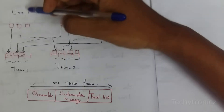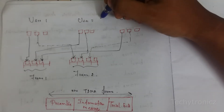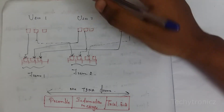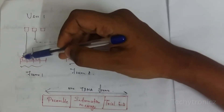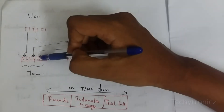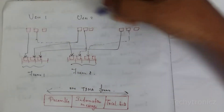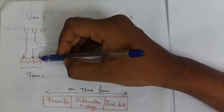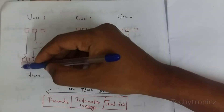Now, looking at the frame structure example with three users: one frame contains three time slots. User 1 uses time slot 1, User 2 uses time slot 2, and User 3 uses time slot 3 — this represents one frame. When User 1 is using time slot 1, User 2 and User 3 cannot transmit, so they wait. This cycle completes one frame.